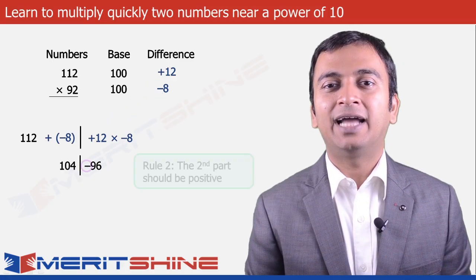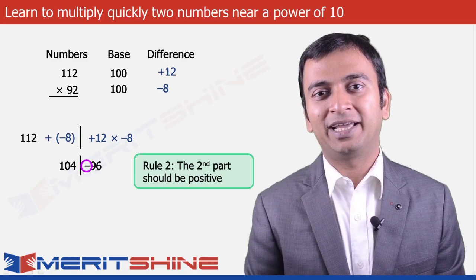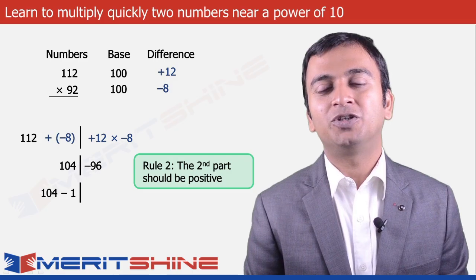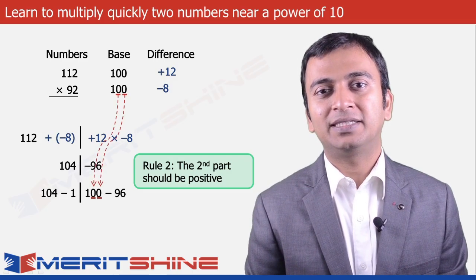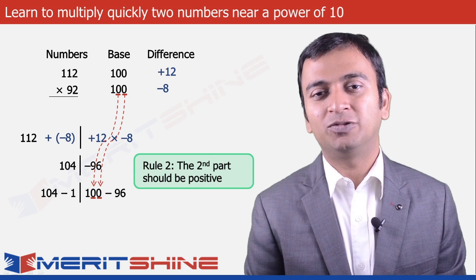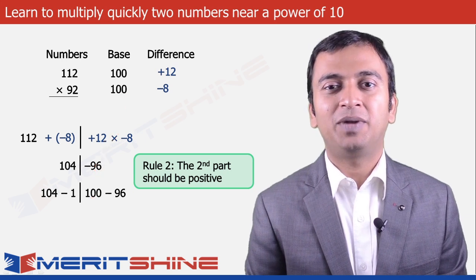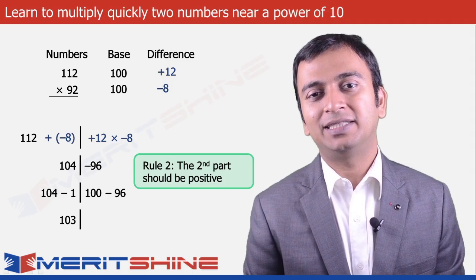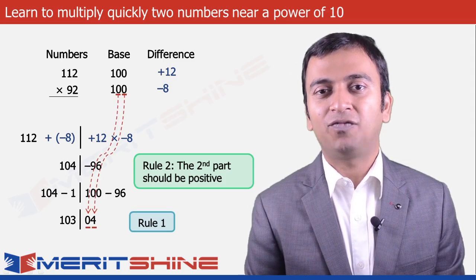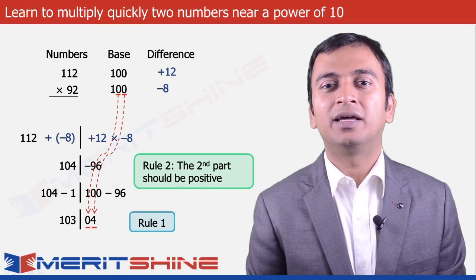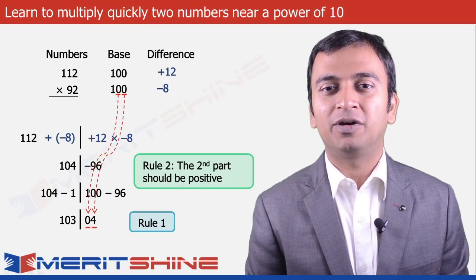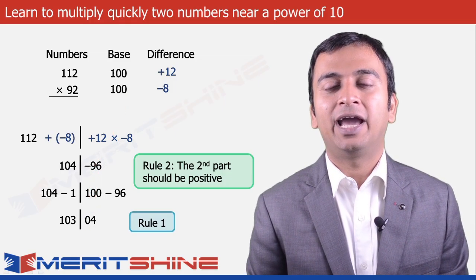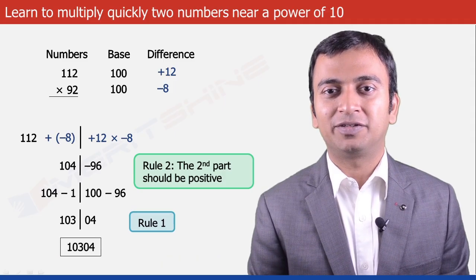Here comes our second rule: the number in the second part would never be negative. To make it positive, we will need to borrow 1 from the first part. Since our base has two zeros, the 1 borrowed will become 100. The first part loses 1, making it 103, and the second part becomes 100 minus 96, which gives us 4. By our first rule, the second part must have 2 digits, so we add a leading zero to get 04. Hence our final answer would be 10304.